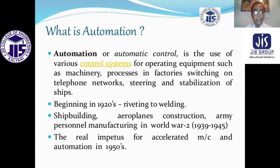Beginning in the 1920s, the transition was from riveting to welding. Riveting is an intermittent process, while welding is a continuous process. From the 1920s, automation was started. Ship building, aeroplane construction, and vehicle manufacturing in World War II (1939–45) all used automation. The real impetus for accelerated machine automation came in the 1950s.